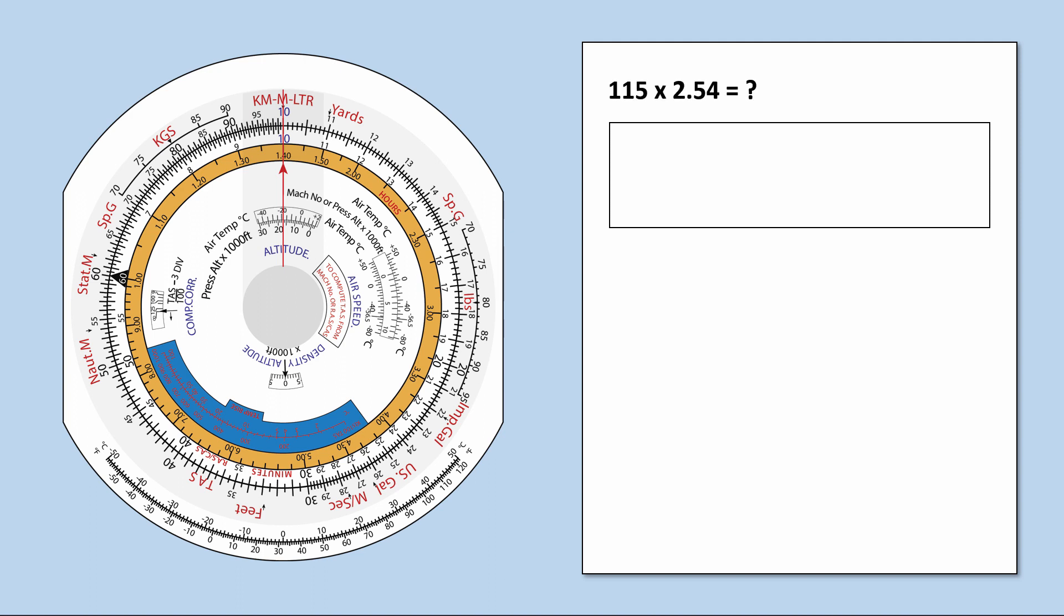Multiply 115 by 2.54. This is approximately 100, 115 rounded down, times approximately 2.5, 2.54 rounded down. Therefore, the answer will be approximately 250. It will not be 2.5, 25, or 2500.